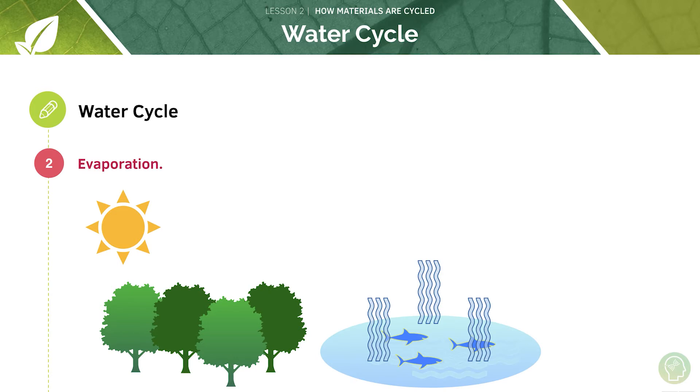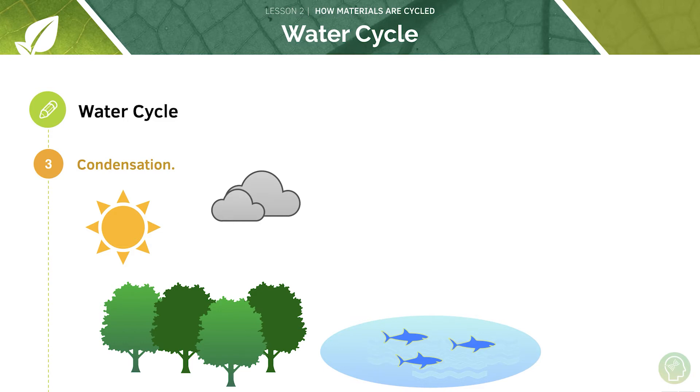We then get evaporation, so water evaporates, changing state from liquid to gas from bodies of water such as lakes and oceans and ponds. Light energy from the sun causes this.